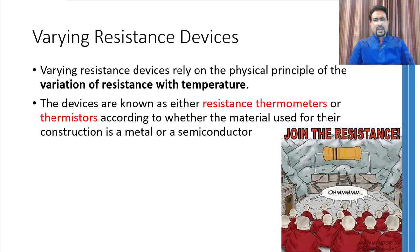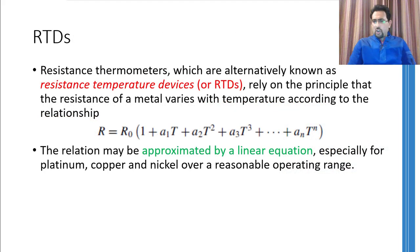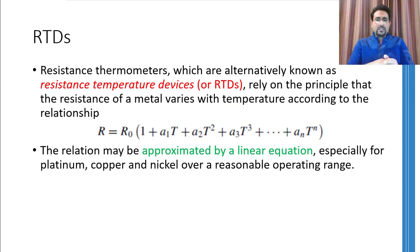The next type of temperature sensors make use of variation of resistance as temperature changes. There are basically two different types of devices that fall into this category: one is a resistance thermometer and the other is a thermistor. Resistance thermometers are made of metals whereas thermistors are made of semiconductors. These devices are also called RTDs, which stands for resistance temperature detectors.